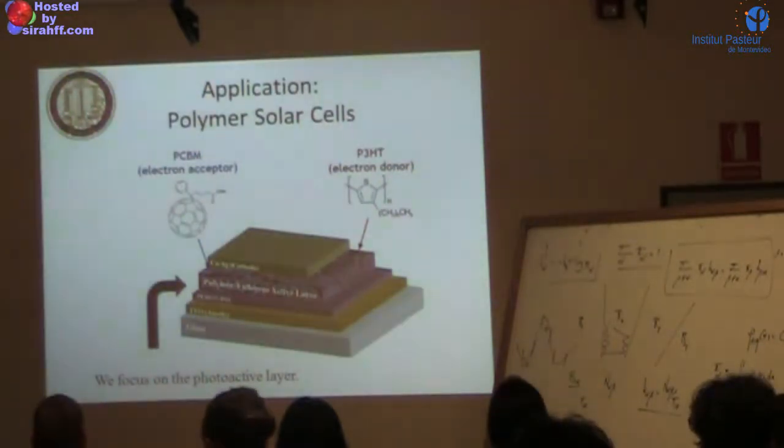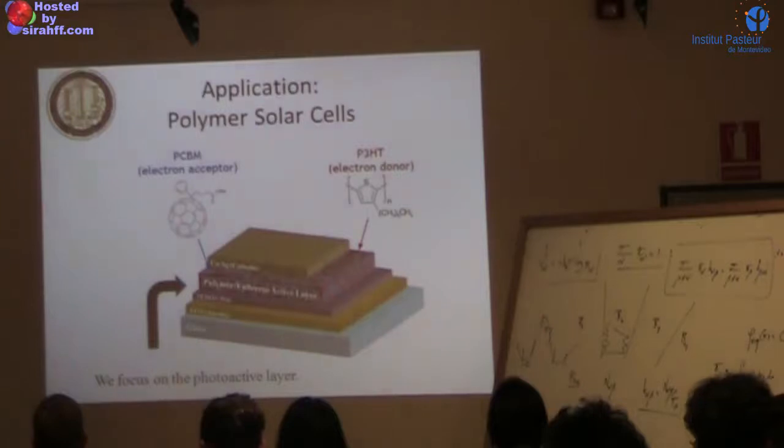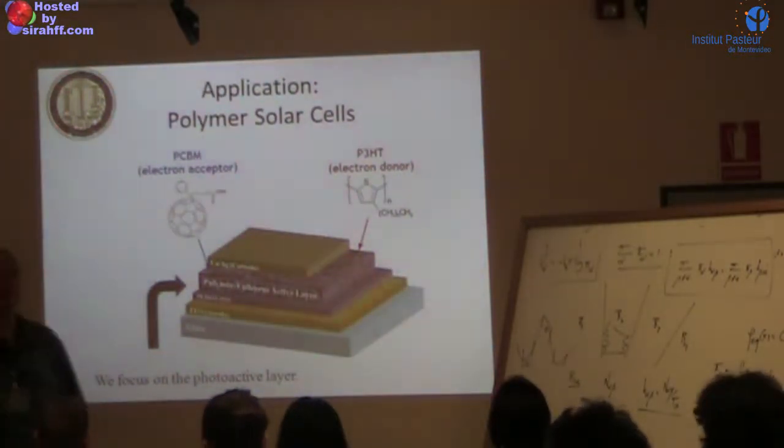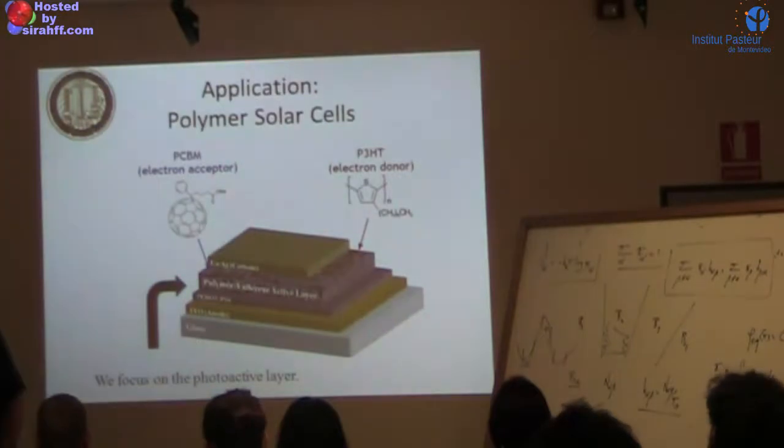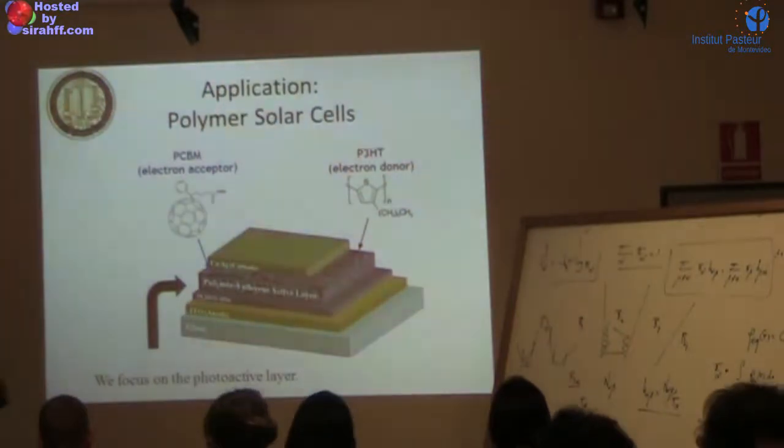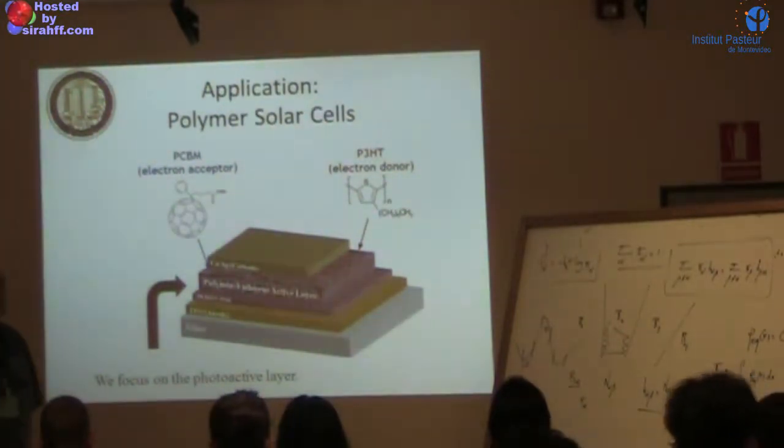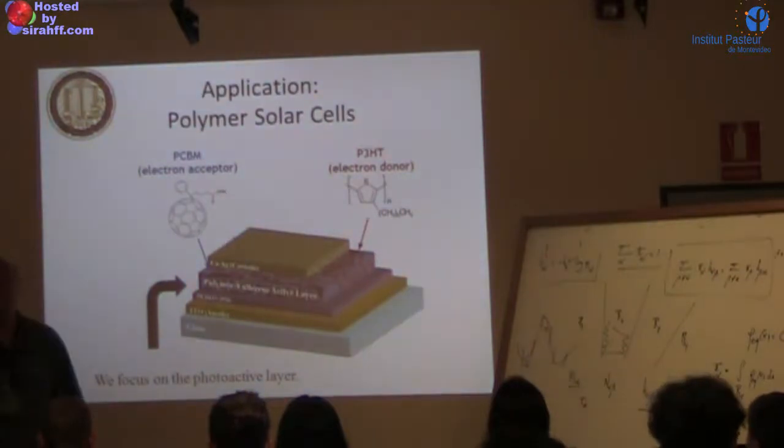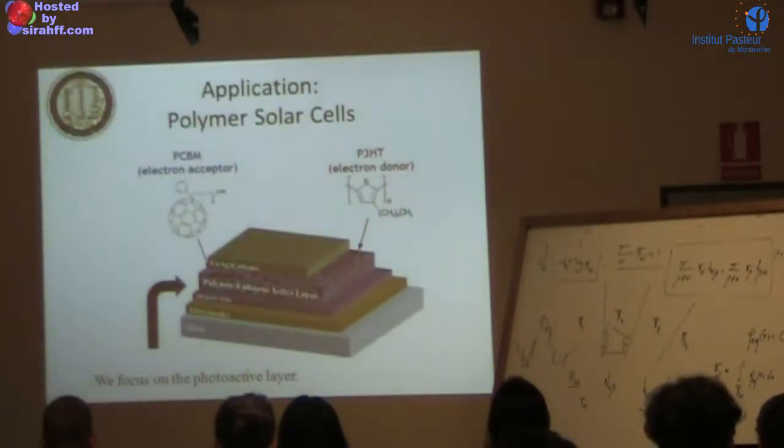Then we have this polymer-fullerene active layer where the transformation from solar energy to electric energy happens. Then there's a cathode on the back, which doesn't have to be transparent because the light comes from the front.